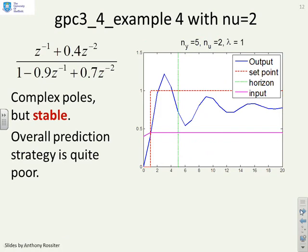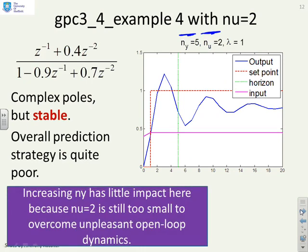Fourth example. This example had some oscillatory modes. And in this case, choosing a low output horizon really isn't good enough. Even nu equals 2 is not large enough to do anything — those predictions are fairly poor, and an optimisation based on that wouldn't be particularly useful. So here you've noticed that increasing nu to 2 is still too small to overcome and deal with the unpleasant open-loop dynamics.